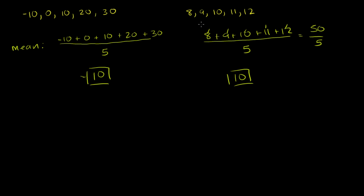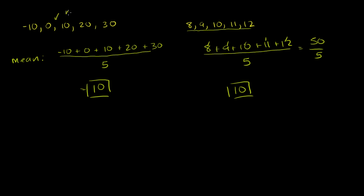But clearly, these sets of numbers are different. If you just looked at the mean, you'd say maybe these sets are very similar. But when you look at the two data sets, all the numbers in the second set are very close to 10 — the furthest is only 2 away. Here, the numbers are further away from 10; even the closer ones are 10 away, and some are 20 away. So this first data set is more disperse — these numbers are further away from our mean than the second set.